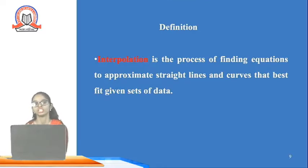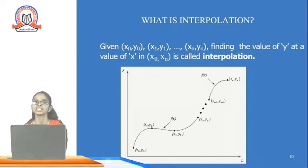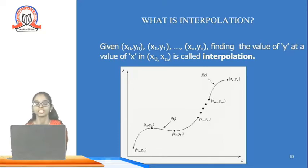Now, what is interpolation? Interpolation is the process of finding an equation to approximate straight lines and curves that best fit a given set of data. If we have values x₀, y₀ through xₙ, yₙ, then finding the respective y values at any x within x₀ to xₙ is called interpolation.